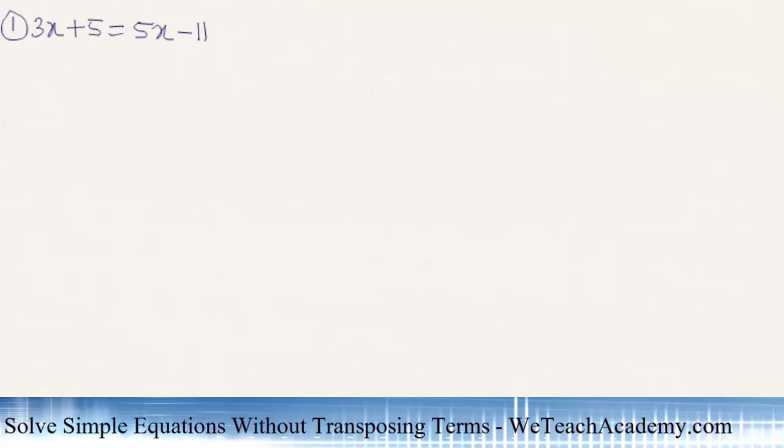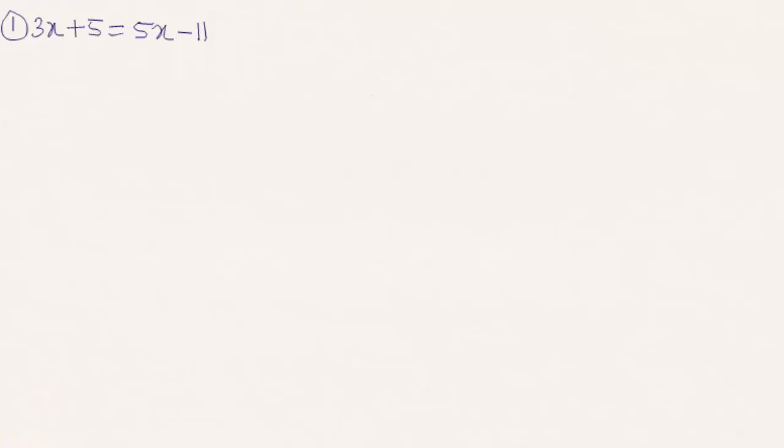Welcome to vtchecademy.com. In this presentation we are going to solve a problem on simple equations using the without-transposing method. The given equation is 3x plus 5 equal to 5x minus 11.